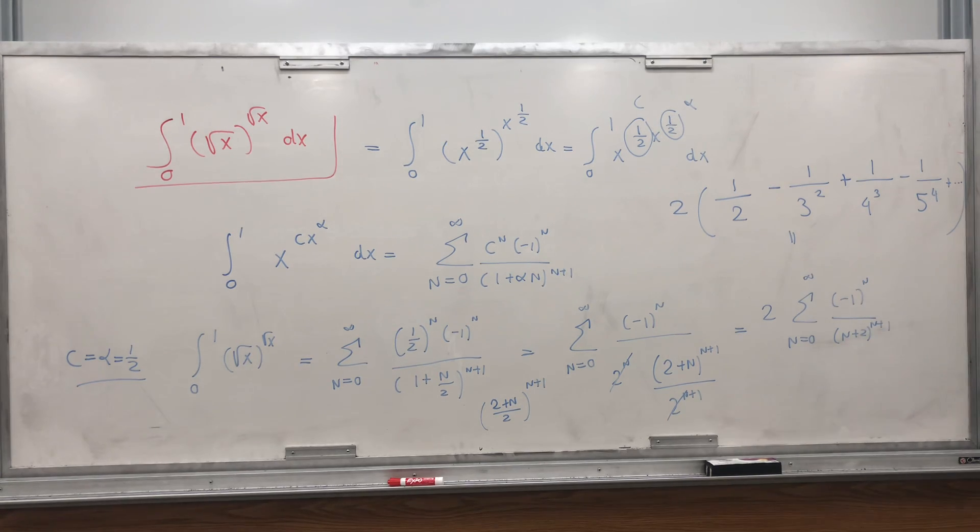So another kind of beautiful series: 1 half minus 1 over 3 squared plus 1 over 4 cubed minus 1 over 5 to the fourth, et cetera, equals to that integral. So I think it's cute.